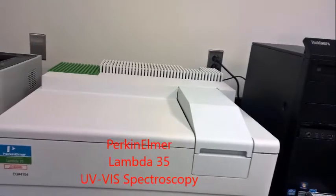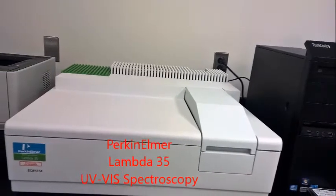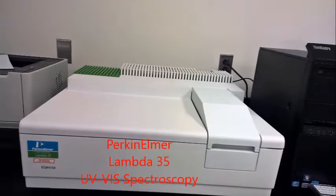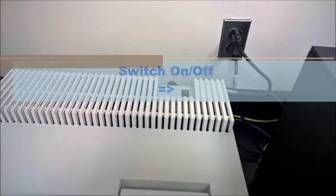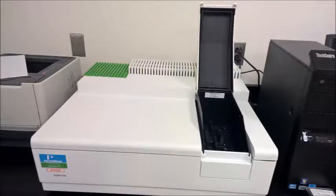This is a double beam UV visible spectrophotometer in the laboratory. The on and off switch of the instrument is located in the back. This is a Perkin Elmer Lambda 35 UV visible spectrophotometer.